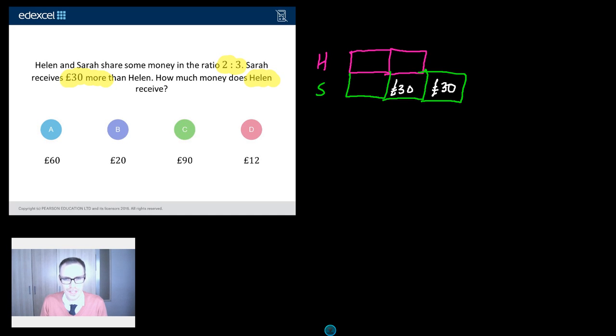So that tells me that all these parts must be 30 as well. So when the question says, how much money does Helen receive? Well, Helen gets those two parts there and two lots of 30 last time I checked was 60 pounds. So Helen must receive 60 pounds done and dusted.